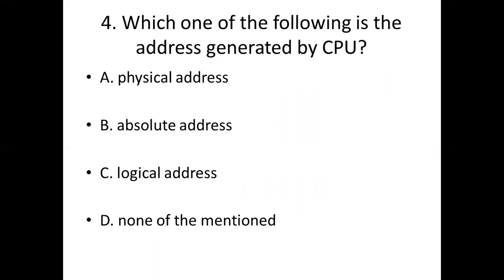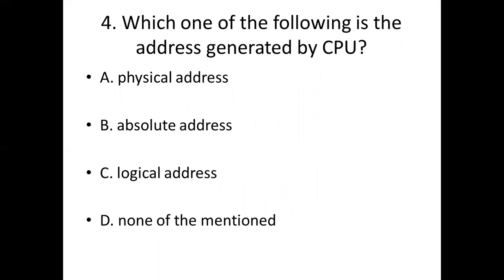Fourth bit: Which one of the following is the address generated by CPU? Option A: Physical addresses. Option B: Absolute addresses. Option C: Logical addresses. Option D: None of the mentioned. Answer: Option C — Logical addresses.